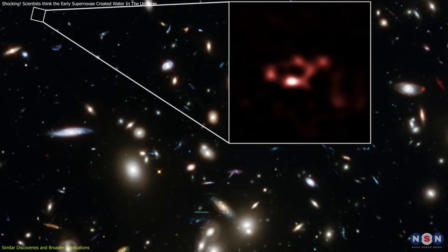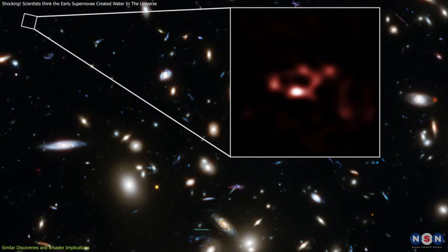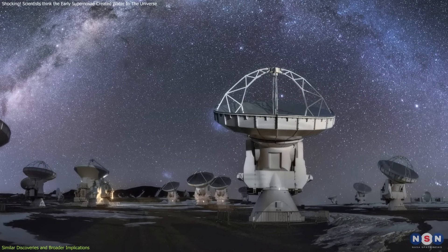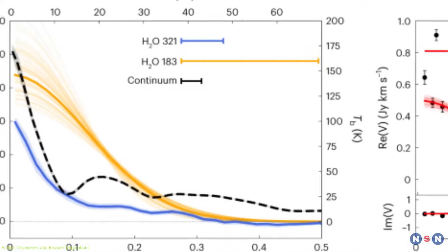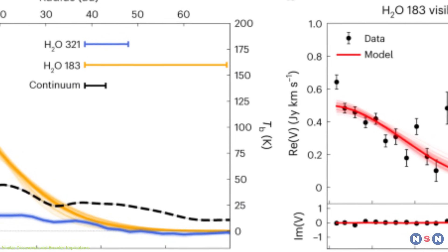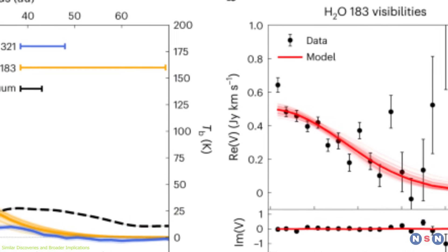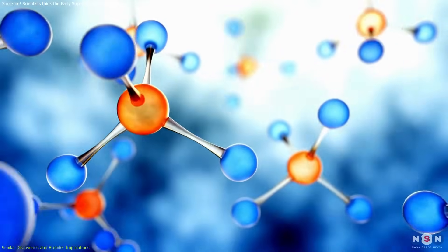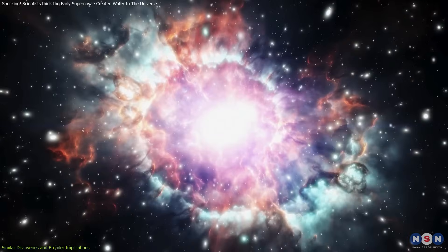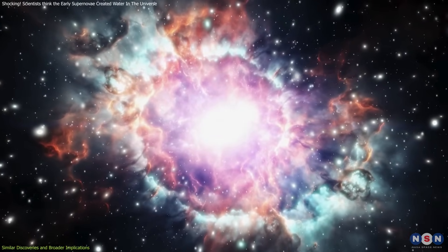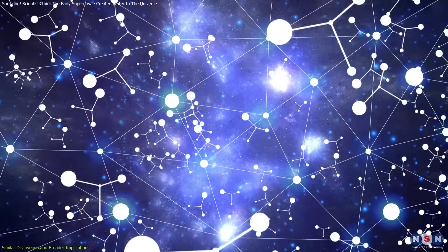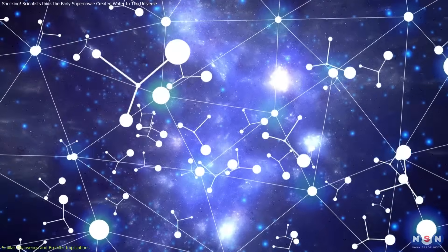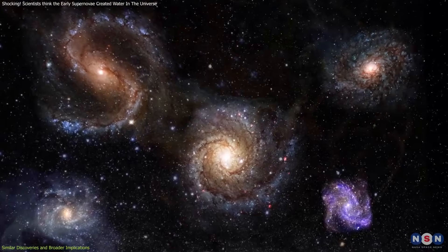One striking example comes from distant galaxies observed using advanced instruments like the Atacama Large Millimeter Submillimeter Array. These observations have detected water vapor and oxygen in regions billions of light years away, showing that water formation was not a late-stage cosmic phenomenon, but likely began during the universe's infancy. This challenges previous assumptions that water primarily formed during later epochs when stars and galaxies were more mature.